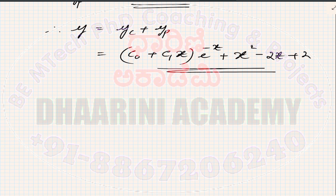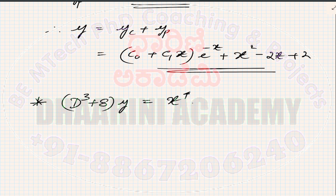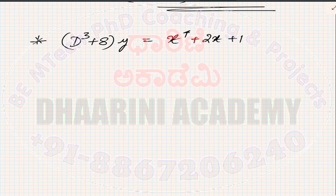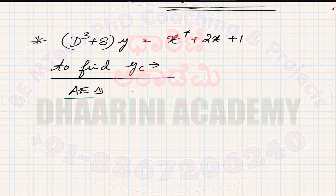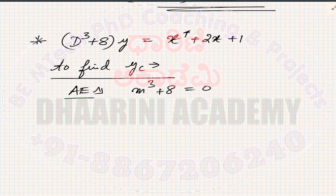Next question: (d³ + 8)y = x⁴ + 2x + 1. This is already in the required format, so directly to find yc I write the auxiliary equation: m³ + 8 = 0. We can factorize or use a calculator. The factors are (m + 2)(m² − 2m + 4) = 0.